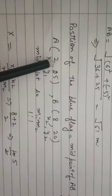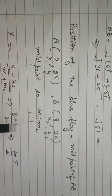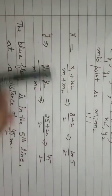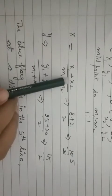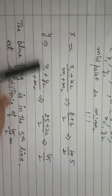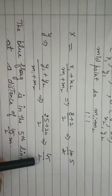So A is X1, Y1, B is X2, Y2. So we need to find position, this means we need to find x and y coordinates. So X is X1 plus X2, M1 plus M2, solve both, this gives 5. Similarly Y, Y1 plus Y2, M1 plus M2, solve, 45 by 2.